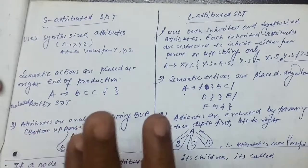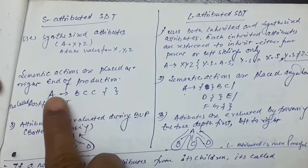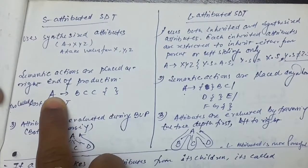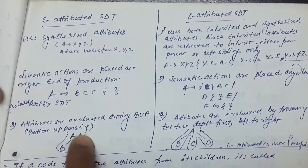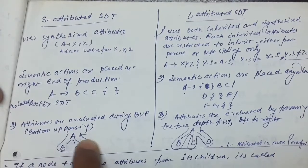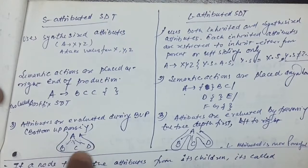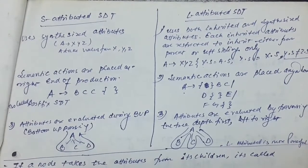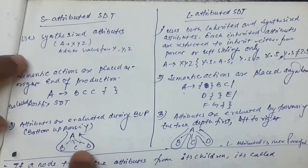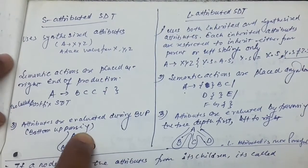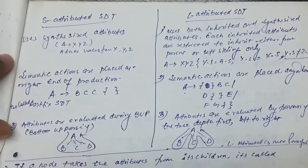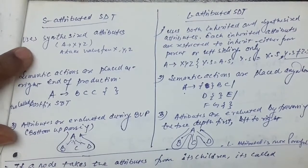The attributes of the left-hand side are evaluated while doing bottom-up parsing. In bottom-up parsing, when we are reducing according to some production rule of the grammar, only then are the attributes set and evaluated.